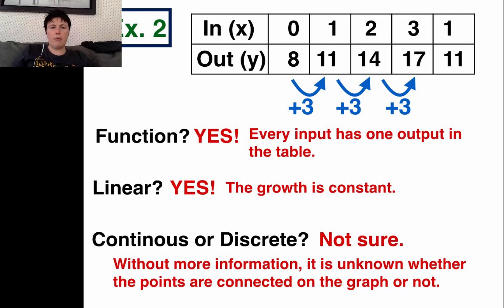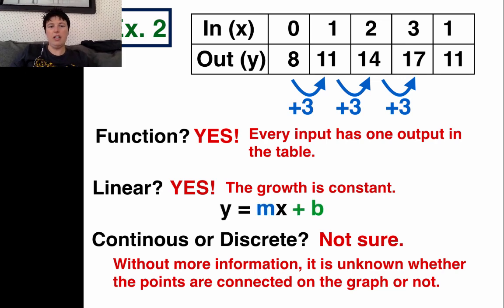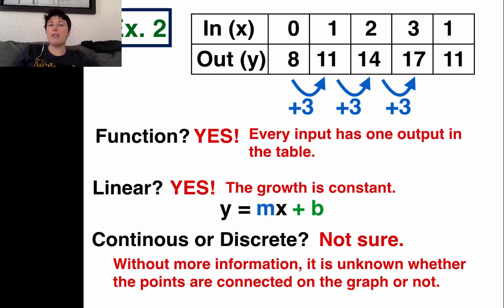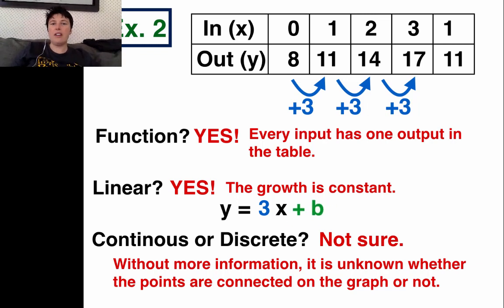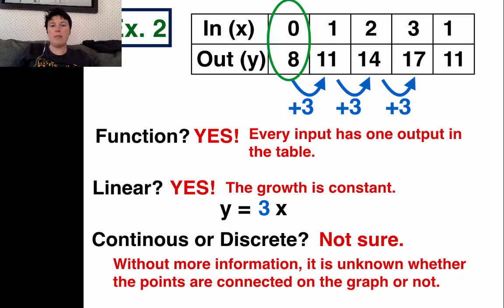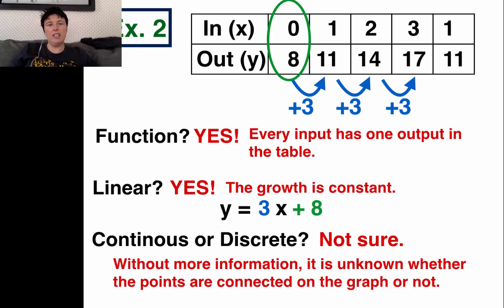Since it's linear, we should write an equation. Linear means we can write y equals mx plus b. That m stands for the growth number — our pattern is growing by plus 3, so m equals 3. The b represents figure zero, which is 8 in this case. So our equation is y equals 3x plus 8.